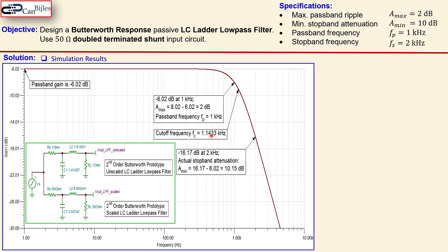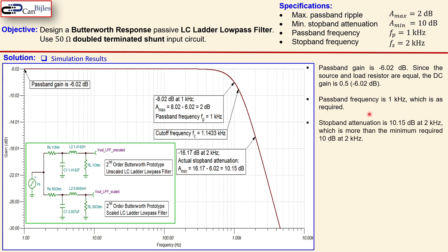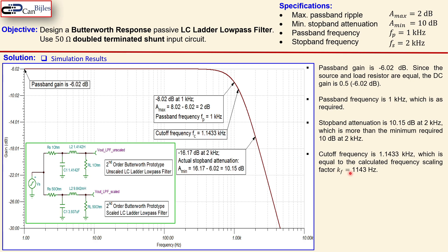The cutoff frequency from simulation is 1.1433 kHz, which matches our calculated value of 1143 Hz very closely — the small difference is just rounding. The stopband attenuation at 2 kHz is 10.15 dB, which meets the required minimum of 10 dB. All results are verified: passband gain 0.5, passband frequency 1 kHz, stopband attenuation exceeding 10 dB, and cutoff frequency 1.1433 kHz.